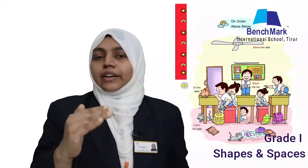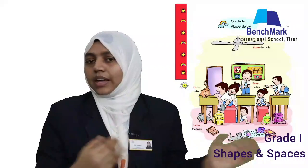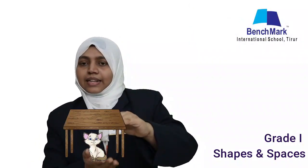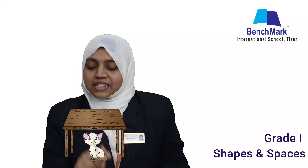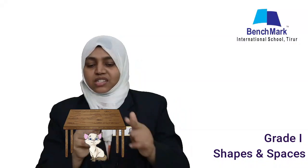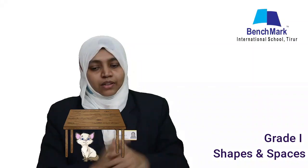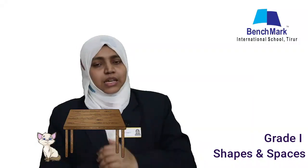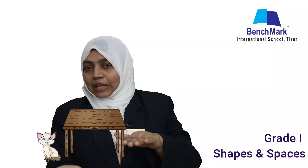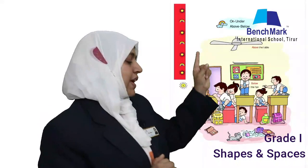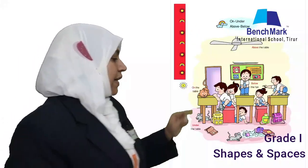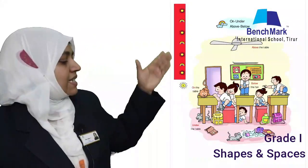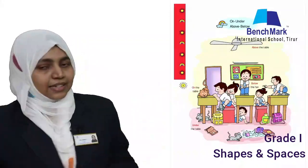We just learned about 'on' and 'above.' Next are 'under' and 'below.' A cat sitting directly beneath the table is under the table. Another cat at a lower position is below the table. In a picture: a fan is above the table, a boy is sitting on the table, a mouse is under the table, and a cat is on the table.